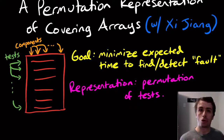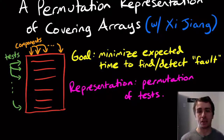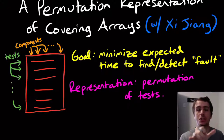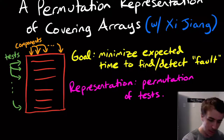The advantage here is that not only is this smaller, but the operator for crossbreeding individuals is very natural, because if you have two permutations, ordered crossover will allow you to do that.